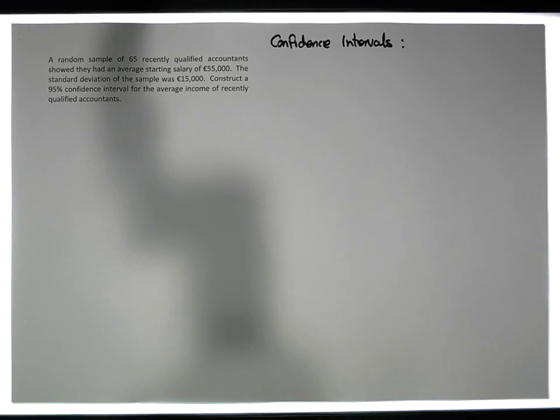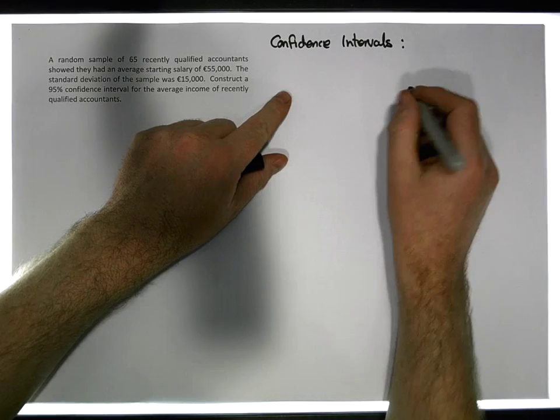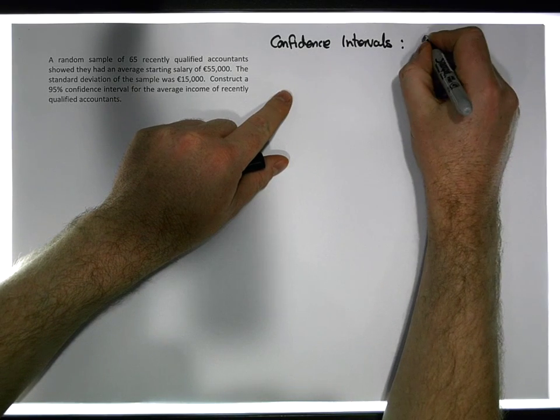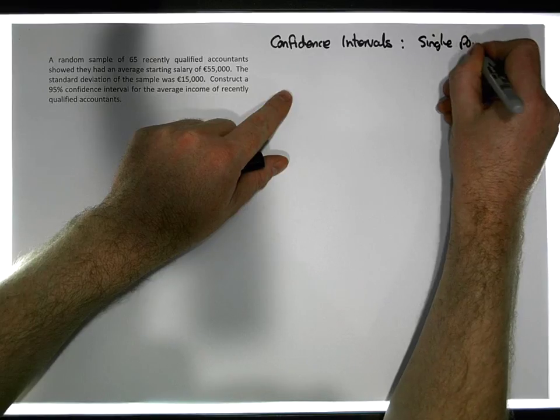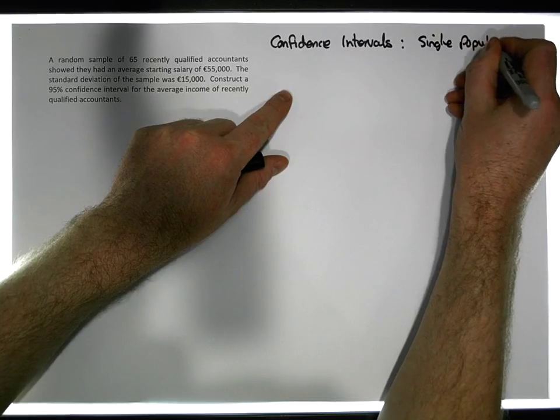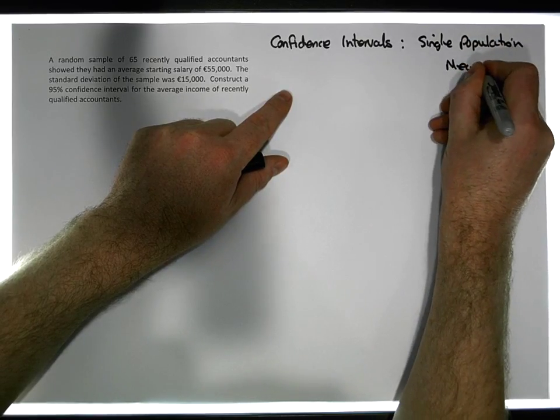Hi guys, this is Jonathan Lambert with the Mathematics Development and Support Service at the National College of Ireland. This short video is another in our series dealing with confidence intervals, and in particular the generation of a confidence interval for a single population mean.